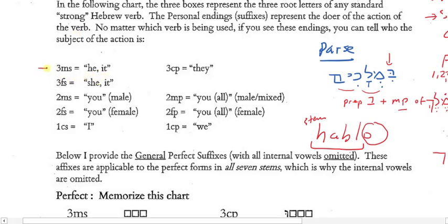We'll put the singular forms on the left, usually plural forms on the right. Now, the person distinctions have to do with who the speaker is, who the addressee is, and then who is not the speaker or the addressee.